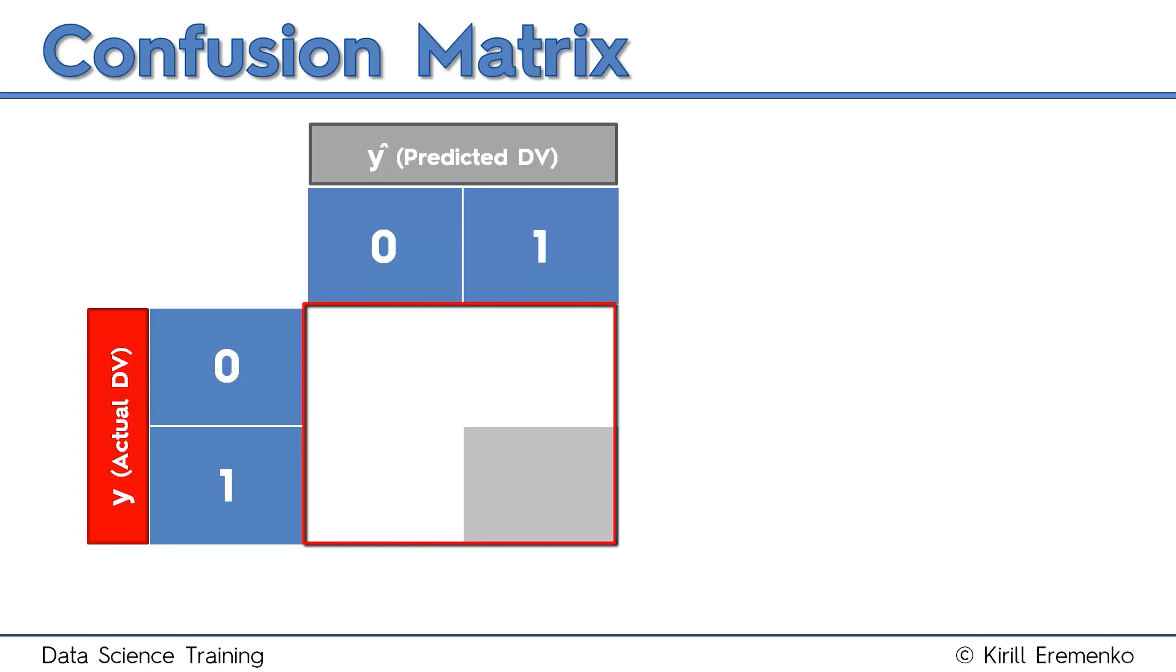We'll start with the furthest square. Right away here, that is the intersection of when y hat is 1, so we're predicting something will happen, or the person will take up the offer, or the event will occur. And at the same time, it actually did happen.